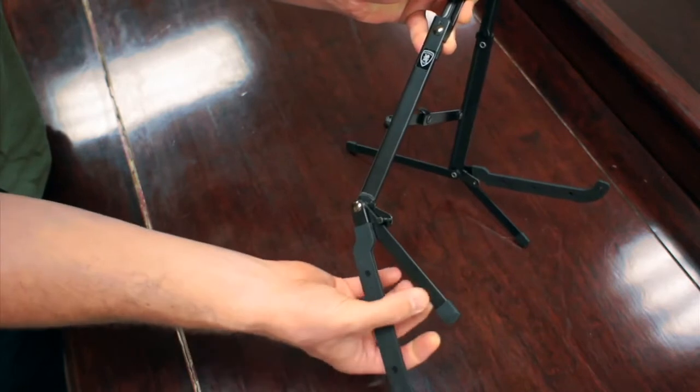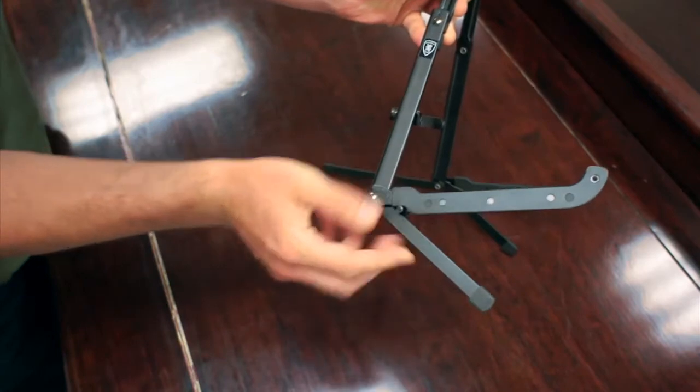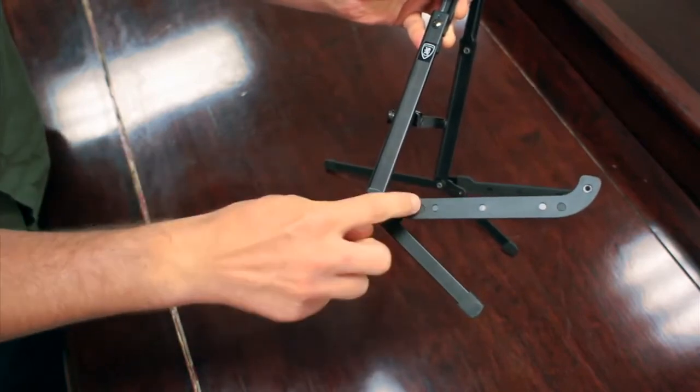Then separate the short leg and the guitar leg. Bring that back around clockwise until it stops, sandwiching that post right in the middle.